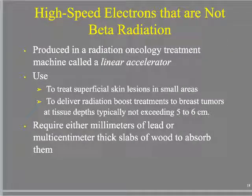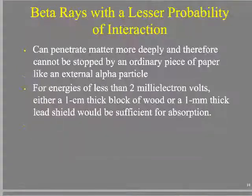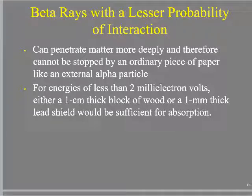High-speed electrons from the linear accelerator are not beta radiation, though they behave the same way. Beta particles can penetrate more deeply and can't be stopped by an ordinary piece of paper like the alpha particle. With sufficient energy, they could potentially travel through a short distance of wood or some skin.